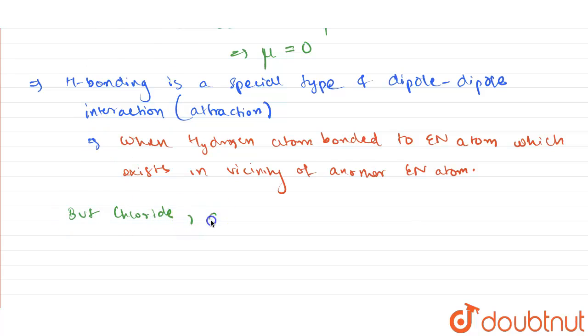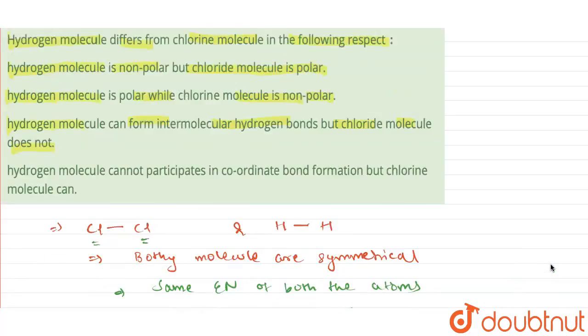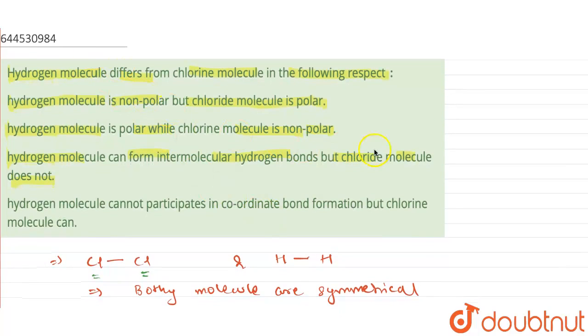does not form hydrogen bonds as size of atom is high and you can say the electron density is too low to form hydrogen bonds. Therefore, option C is the correct option because hydrogen can form intermolecular hydrogen bonds but chloride molecule does not.